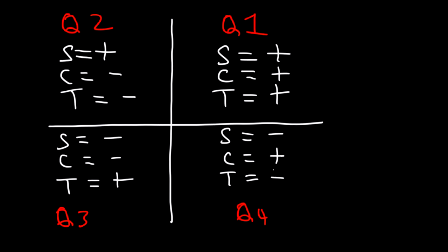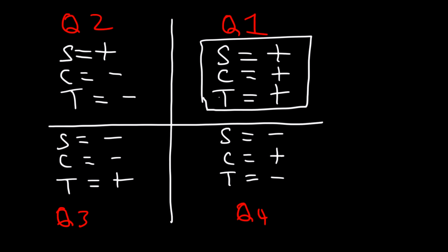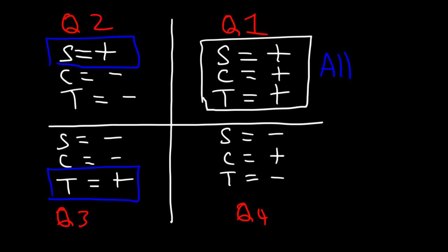So these are some things that you want to commit to memory. In quadrant 1, everything is positive. In quadrant 2, sine is positive. In quadrant 3, tangent is positive. In quadrant 4, cosine is positive. Perhaps you've heard of the expression: All Students Take Calculus. All means that in quadrant 1, all signs — sine, cosine, and tangent — are positive. Students: S for sine is positive in quadrant 2. Take: T for tangent is positive in quadrant 3. Calculus: C for cosine is positive in quadrant 4. Something you may find useful.